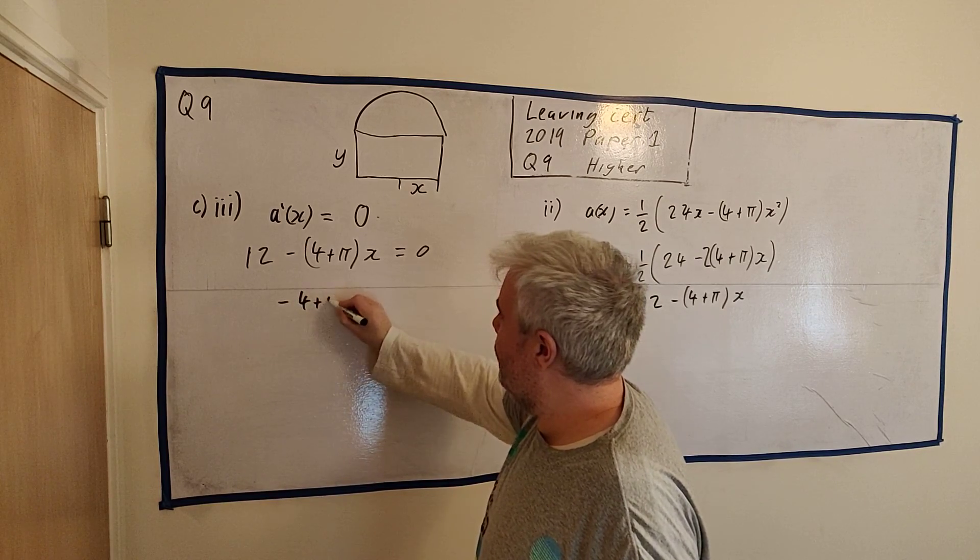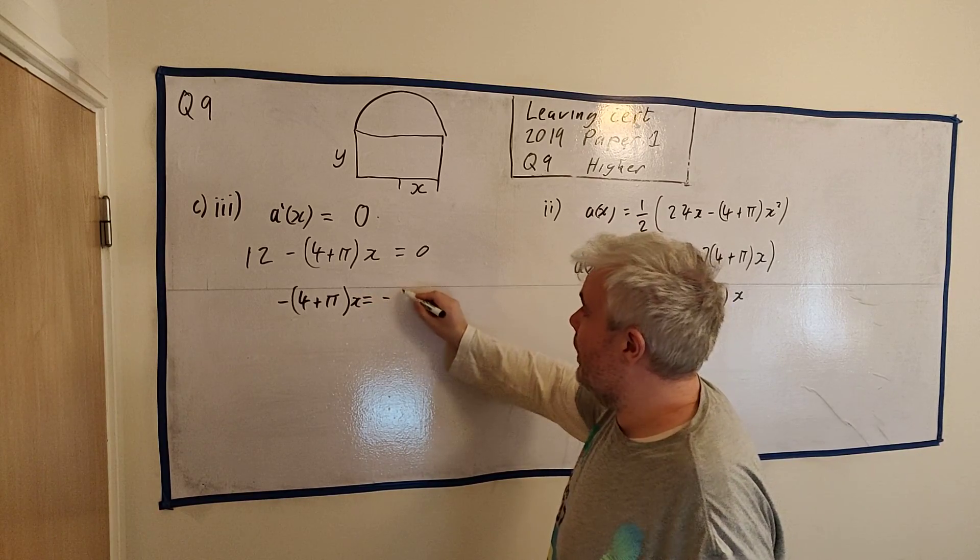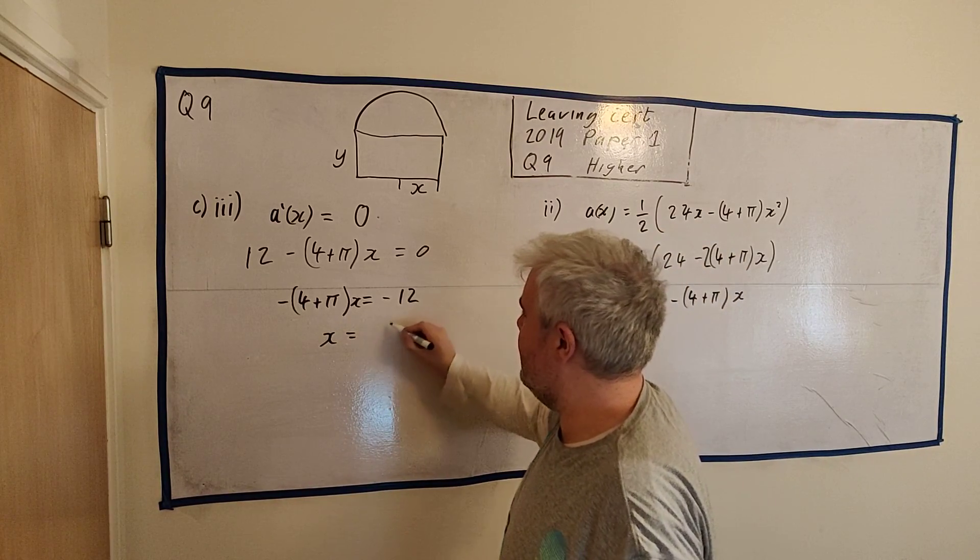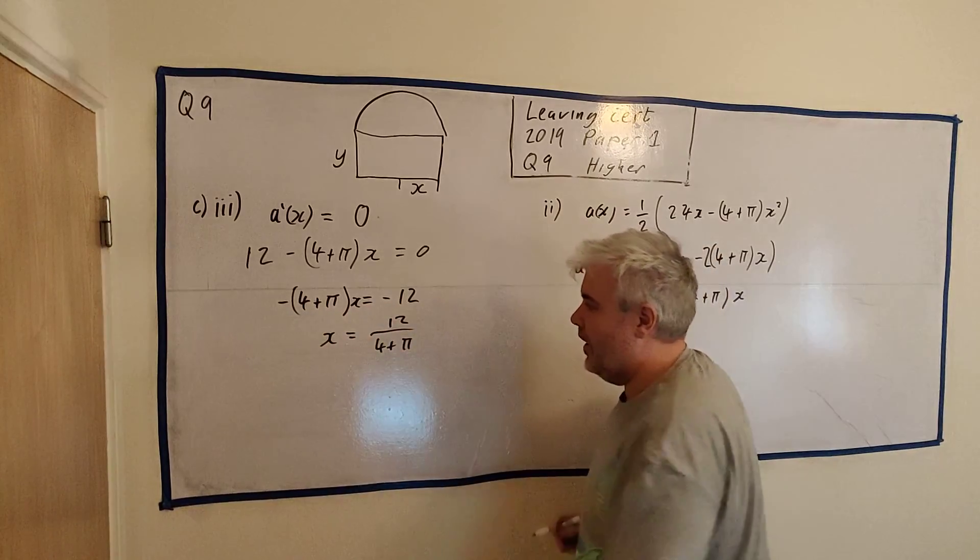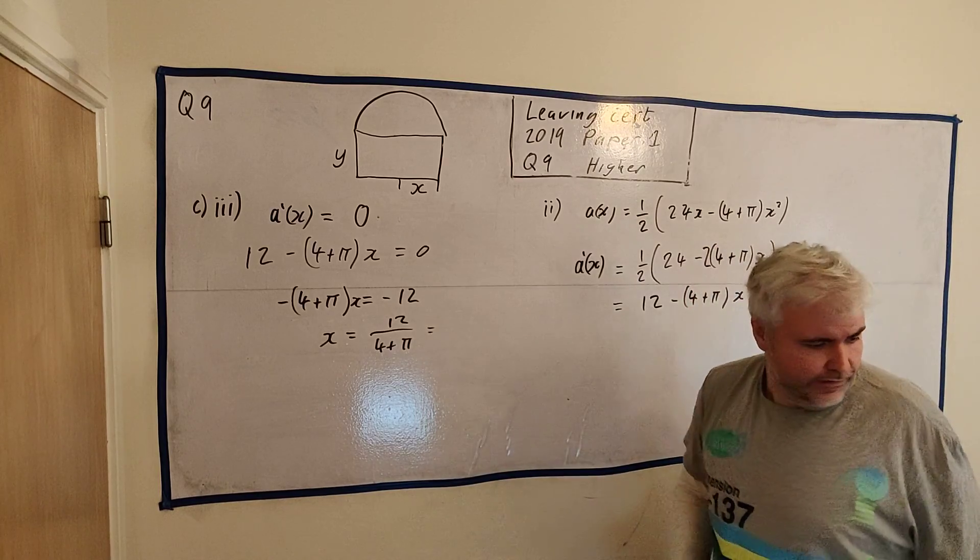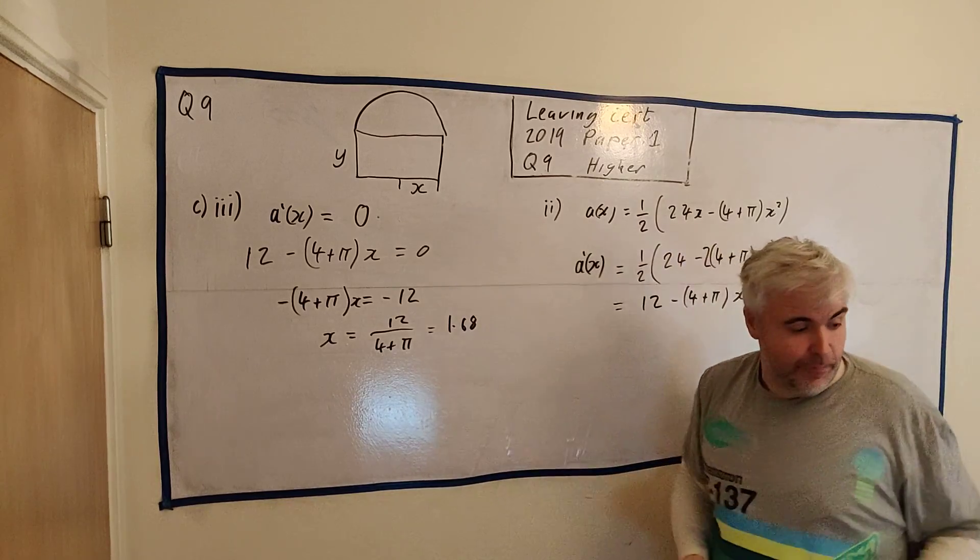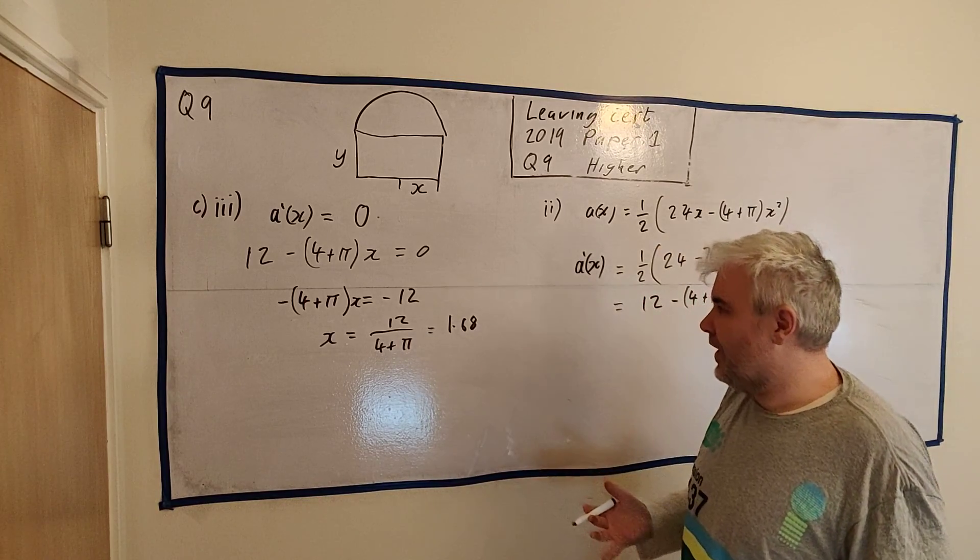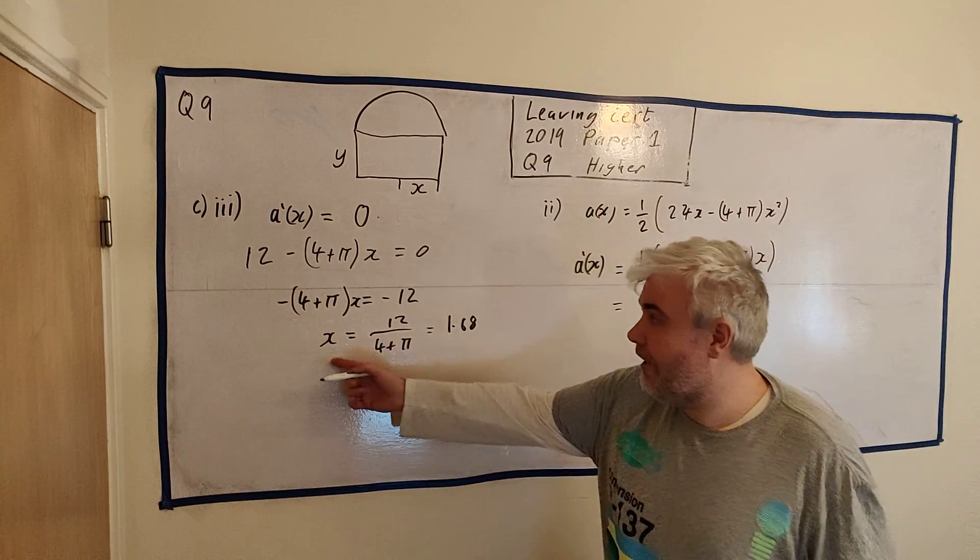We would get -(4 + π)x equals -12. Let's divide by this here. We'll have x equals 12 over (4 + π). Minus divided by a minus is a plus. So we have x. This is a number. Let's get it on the calculator. It comes out at 1.68 to two decimal places. Now, I wouldn't usually get a number like this on the calculator. But it might be handy to see in this question.